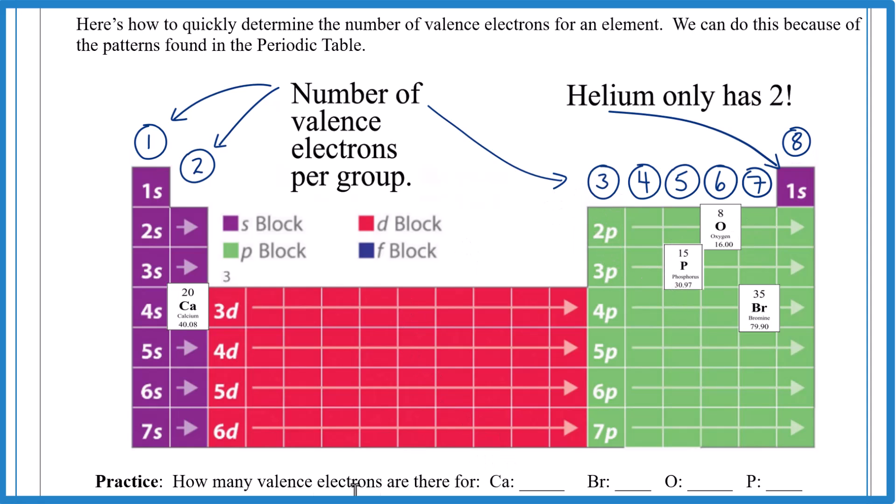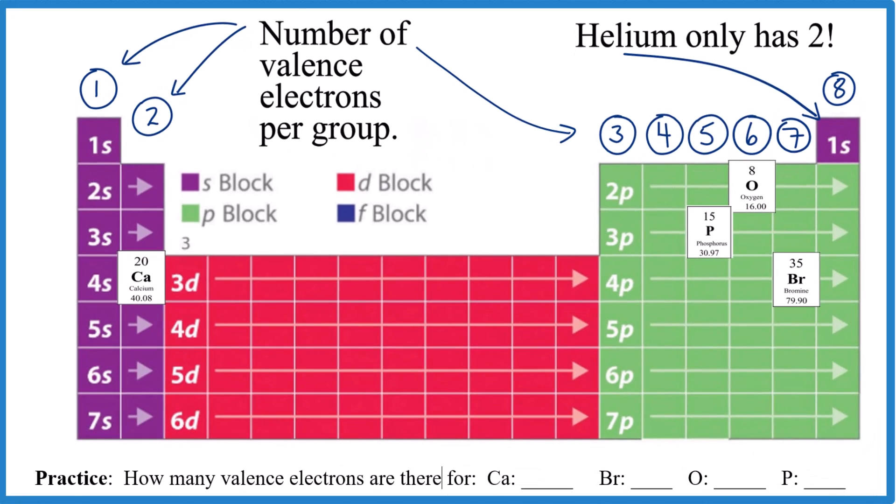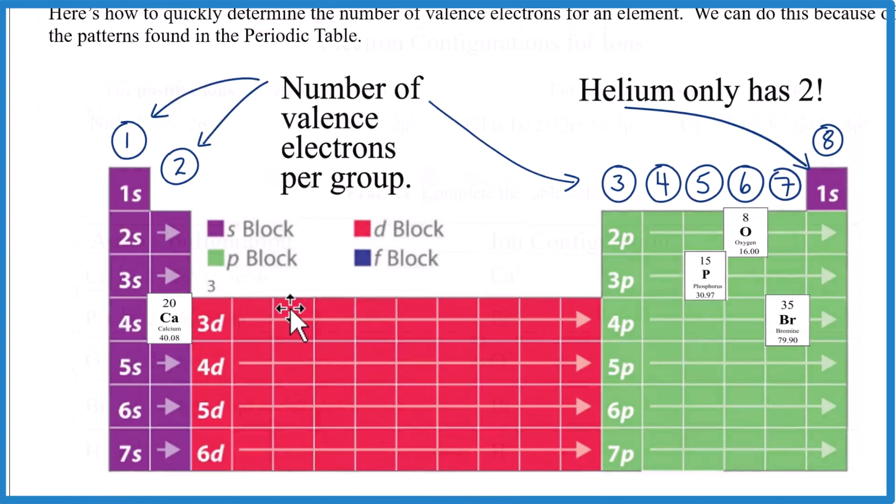So pause, figure out how many valence electrons we have for each of these. Calcium group 2, 2 valence electrons. Bromine group 17, used to be called 7A, 7 valence electrons. Oxygen has 6, and phosphorus has 5. This pattern is really worth memorizing.